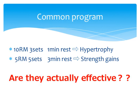The common training program for muscle hypertrophy is 3 sets of 10RM with 1 minute rest. On the other hand, for strength gains it is 5 sets of 5RM with 3 minutes rest.